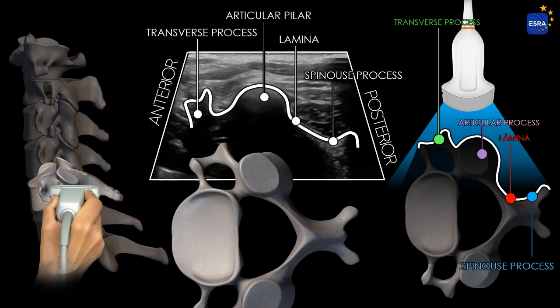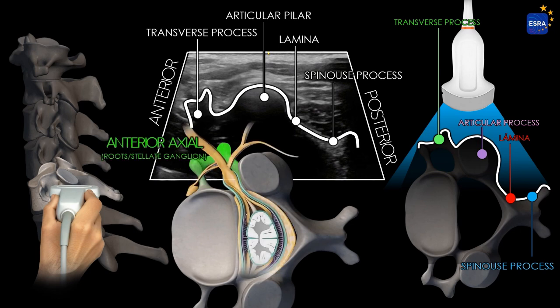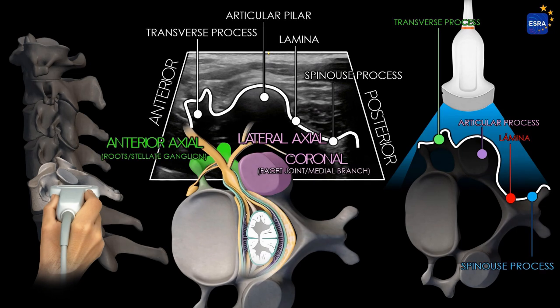To evaluate the cervical nerve roots and the sympathetic chain, an anterior axial scanning approach is employed. For the identification of the zygapophysial facet joints and medial branches, a lateral axial or coronal scanning plane is used. Lastly, for the assessment of the neuraxis, specifically the epidural space, the preferred approach is a paramedian oblique sagittal plane.